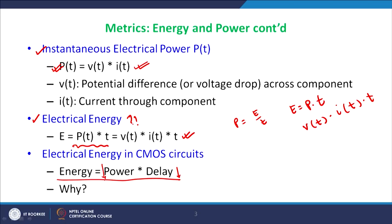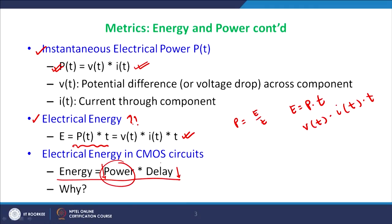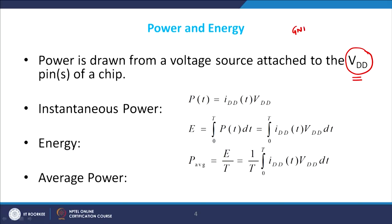To reduce energy you must reduce delay or reduce power. The problem is that power and delay do not decrease together. If power dissipation goes high, delay also increases, reducing frequency. If you reduce delay, power dissipation goes high. So you need to find a solution that optimizes energy rather than power alone, which requires optimizing power and delay individually.